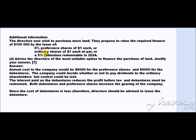Option 3: 5% debentures redeemable in 2024 — interest = 5% × $100,000 = $5,000. Comparing preference shares and debentures, debentures cost $1,000 less. Furthermore, interest on debentures is tax-deductible, making it more profitable for the business. Both preference shares and debentures increase the company's gearing and risk, but with debentures, ordinary shareholders do not lose control over the company. Therefore, issuing debentures is the most suitable option, and the directors should proceed with that.